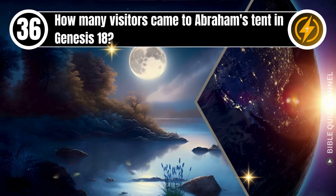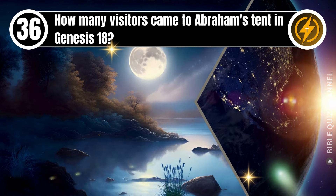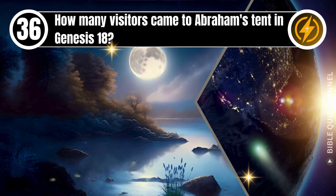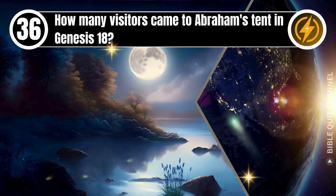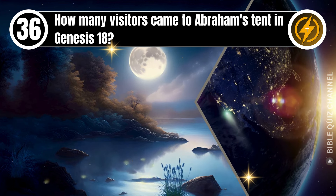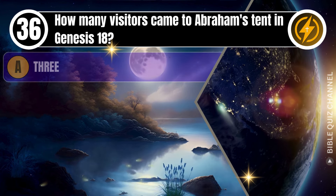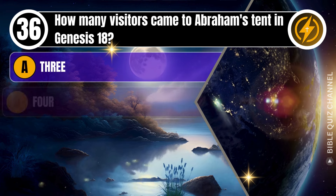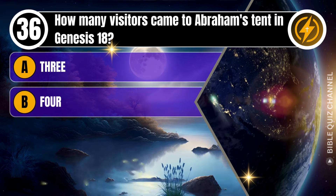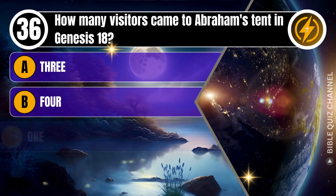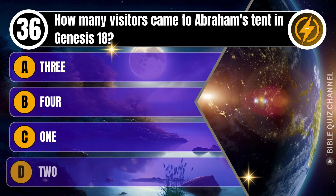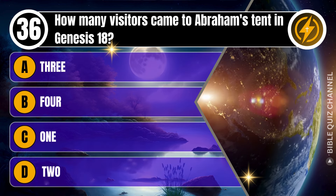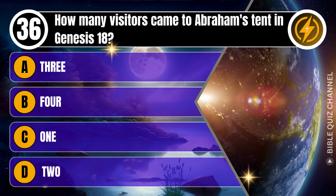Question 36. How many visitors came to Abraham's tent in Genesis 18? A. 3. B. 4. C. 1. D. 2. You get 10 seconds.